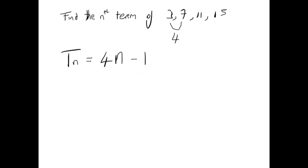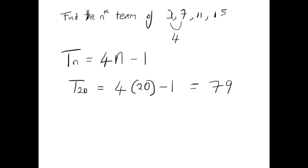So let's go back to the original question we were asking. What is the 20th term in this sequence? The easy way to find that out is by putting 20 in for n in the formula, which gives us 4 times 20, which is 80, minus 1, which gives us 79. So the 20th term of this sequence is 79.